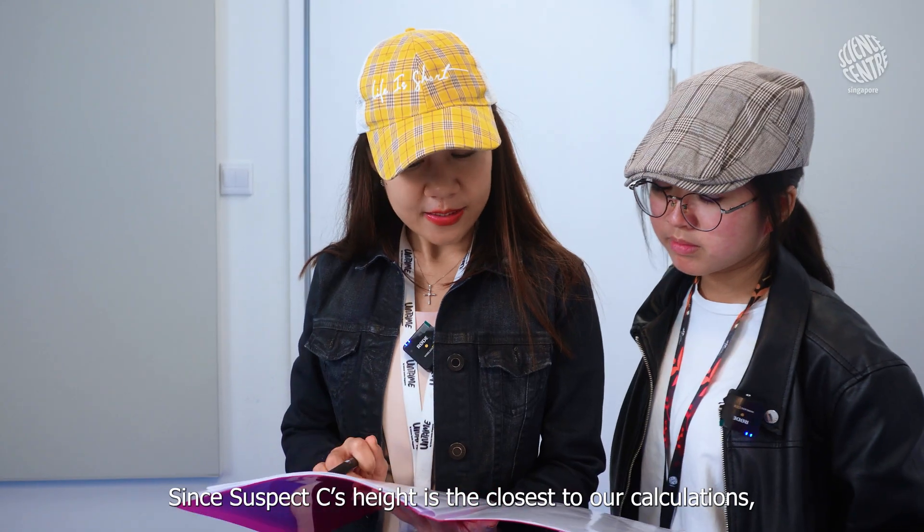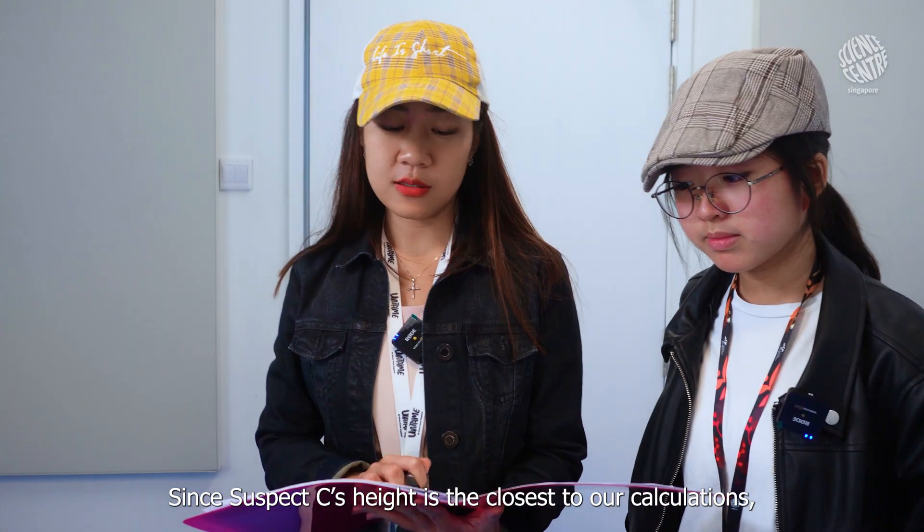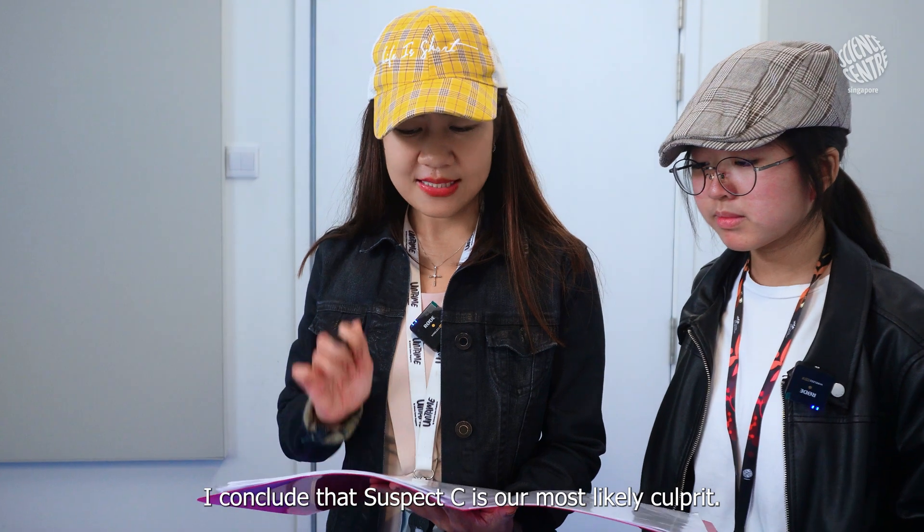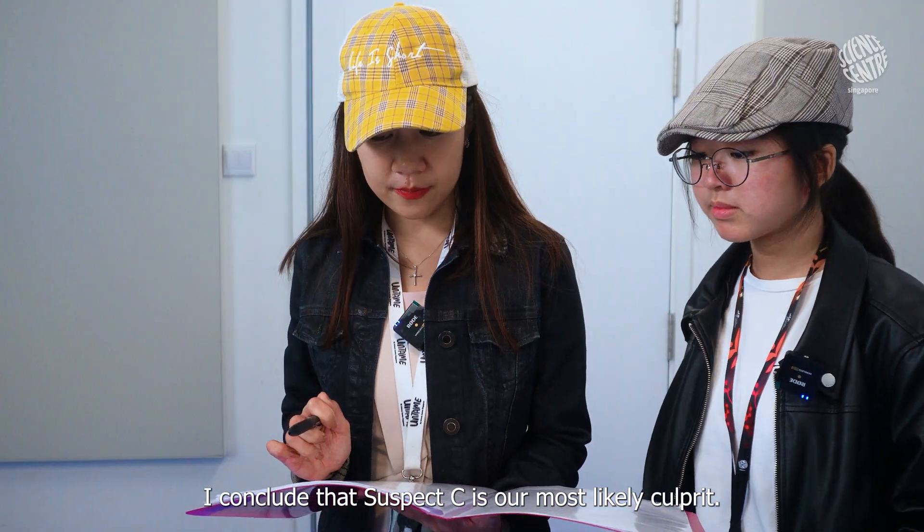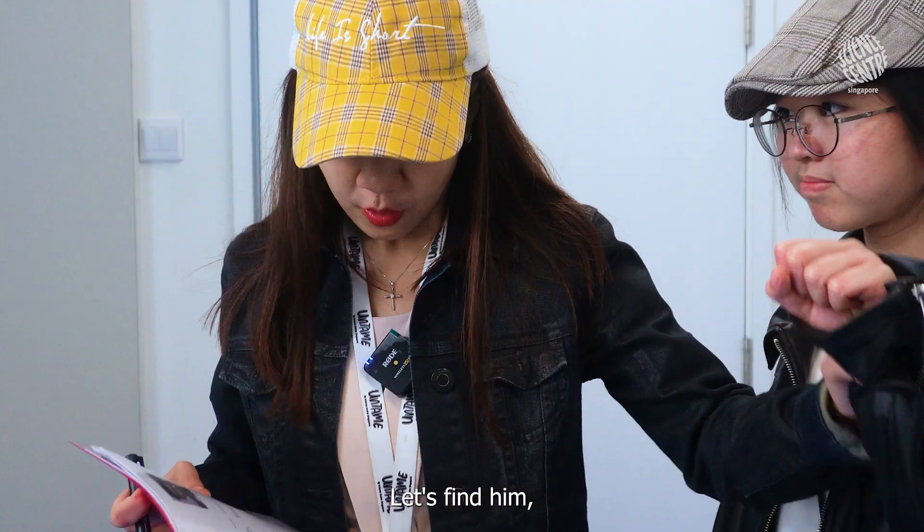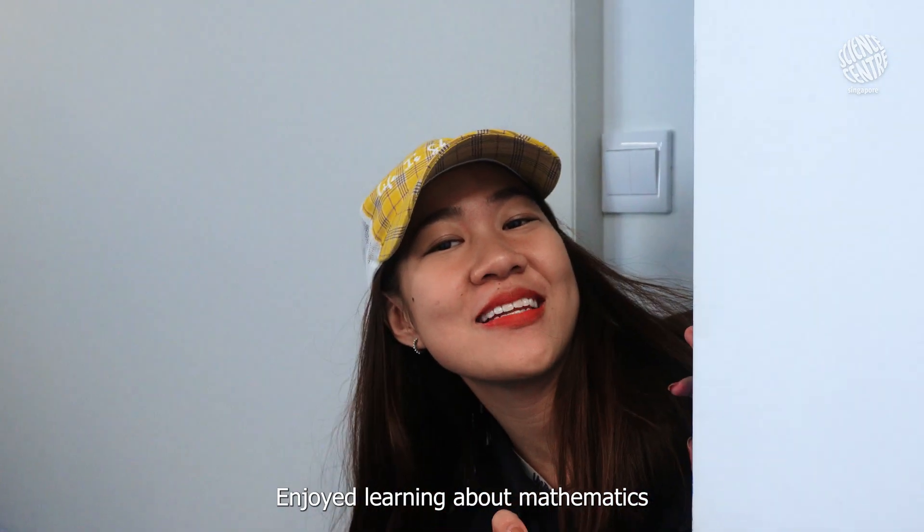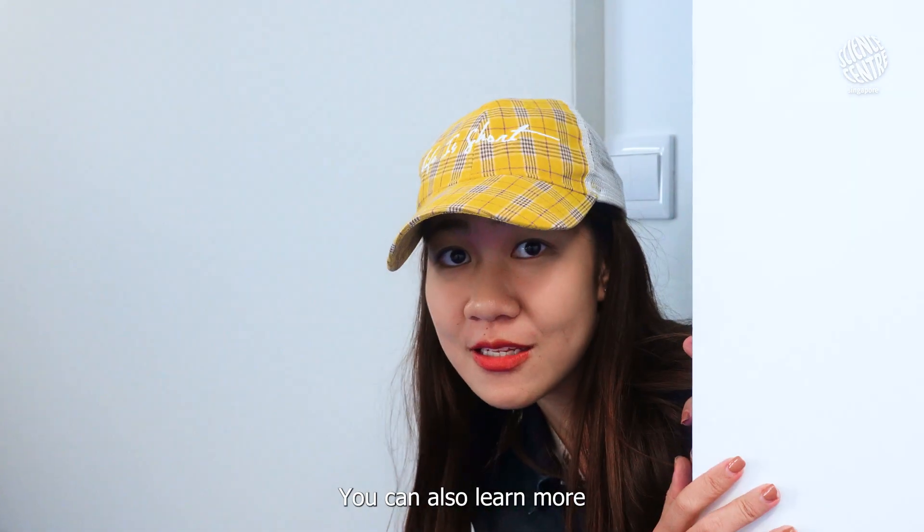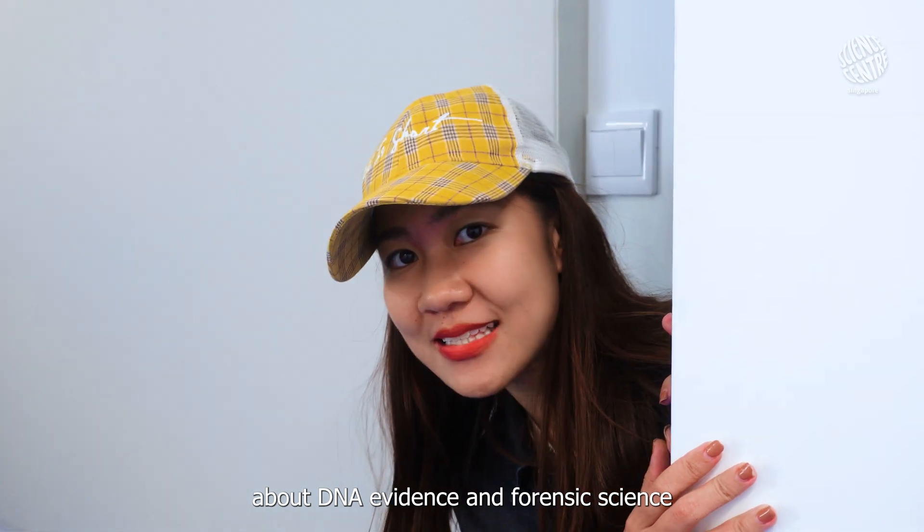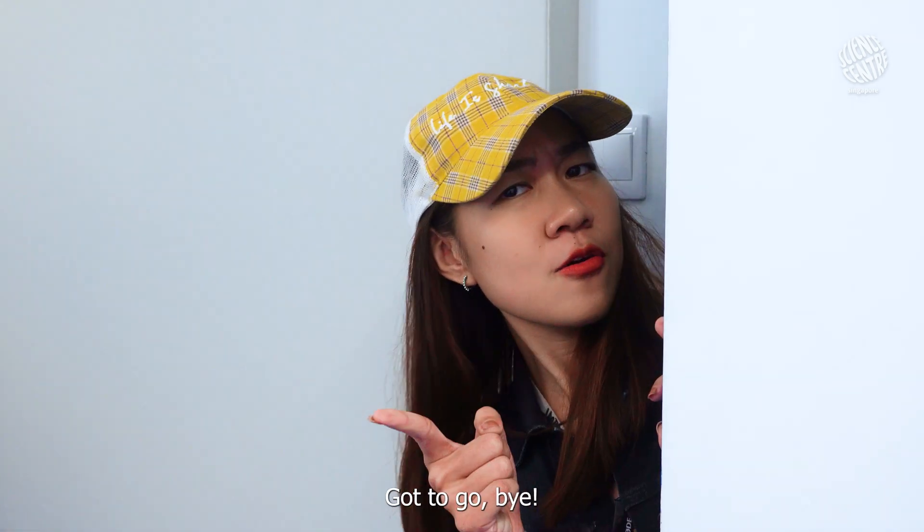Since Suspect C's height is the closest to our calculations, I conclude that Suspect C is our most likely culprit. Let's find him, question him, and retrieve the treasure at once! Enjoyed learning about mathematics and forensic science? You can also learn more about DNA evidence and forensic science through our workshops. Got to go! Bye!